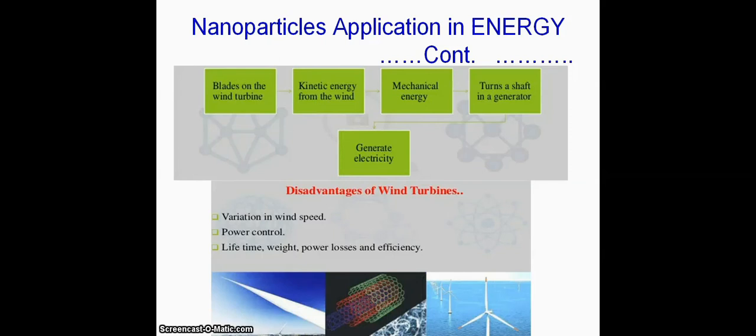Another application is wind energy. Blades on the wind turbine absorb kinetic energy from the wind and convert it into mechanical energy, and that mechanical energy turns a shaft in a generator, and the generator generates electricity as shown in this diagram.